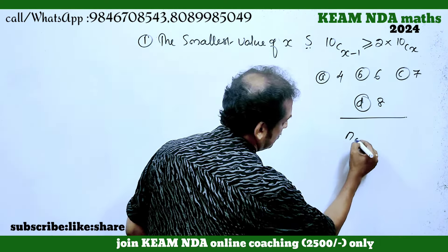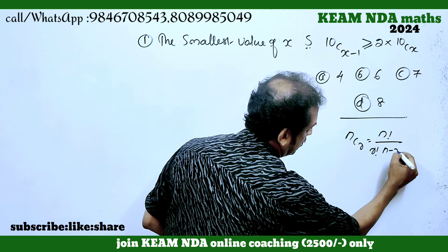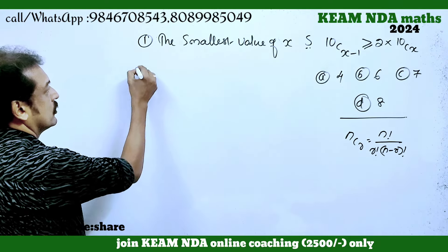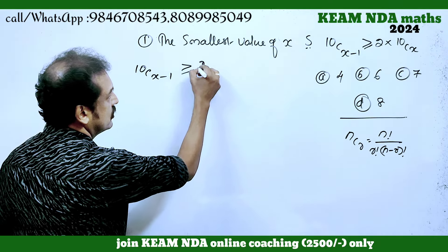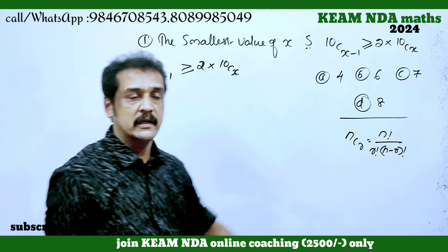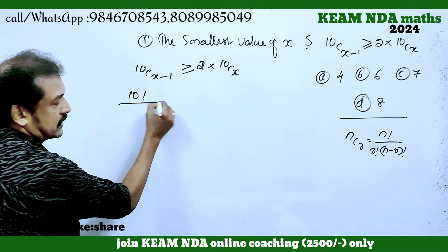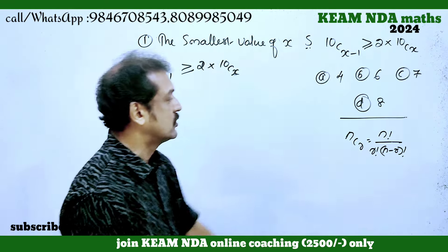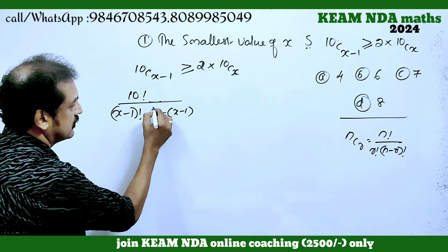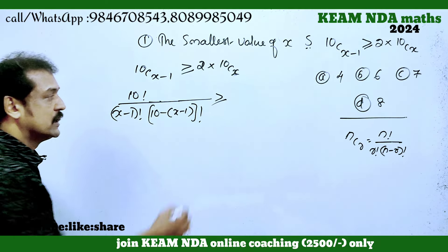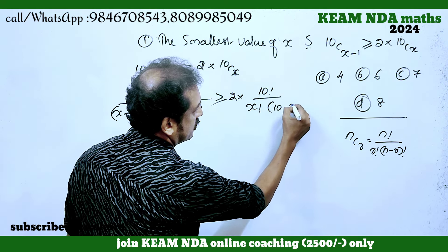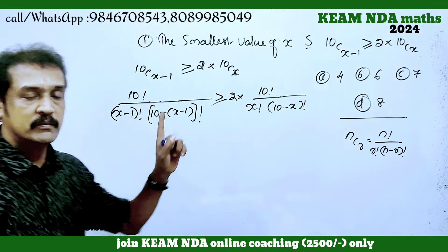What is nCr? nCr equals n factorial divided by r factorial into (n minus r) factorial. So 10C(x-1) equals 10 factorial divided by (x-1) factorial into (10 minus (x-1)) factorial. The right-hand side is 2 into 10C(x), which is 10 factorial divided by x factorial into (10 minus x) factorial.